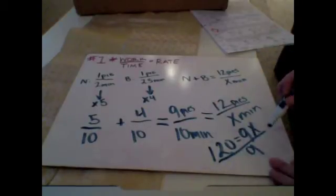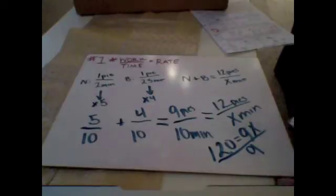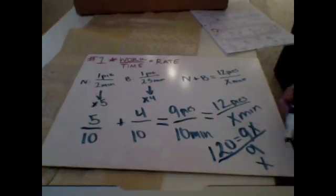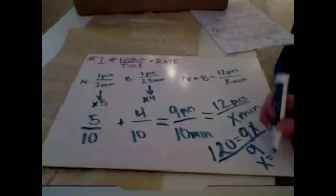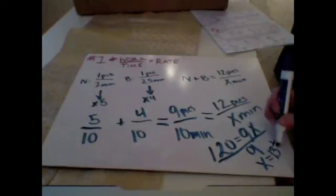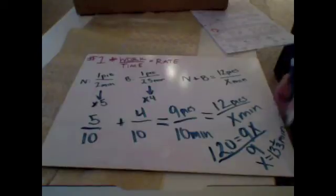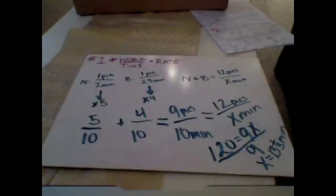So X, when I divide this in my calculator, I get that it is approximately thirteen and one-third minutes. So together, the team of Nolan and Brandon can eat twelve pies in thirteen and one-third of a minute.